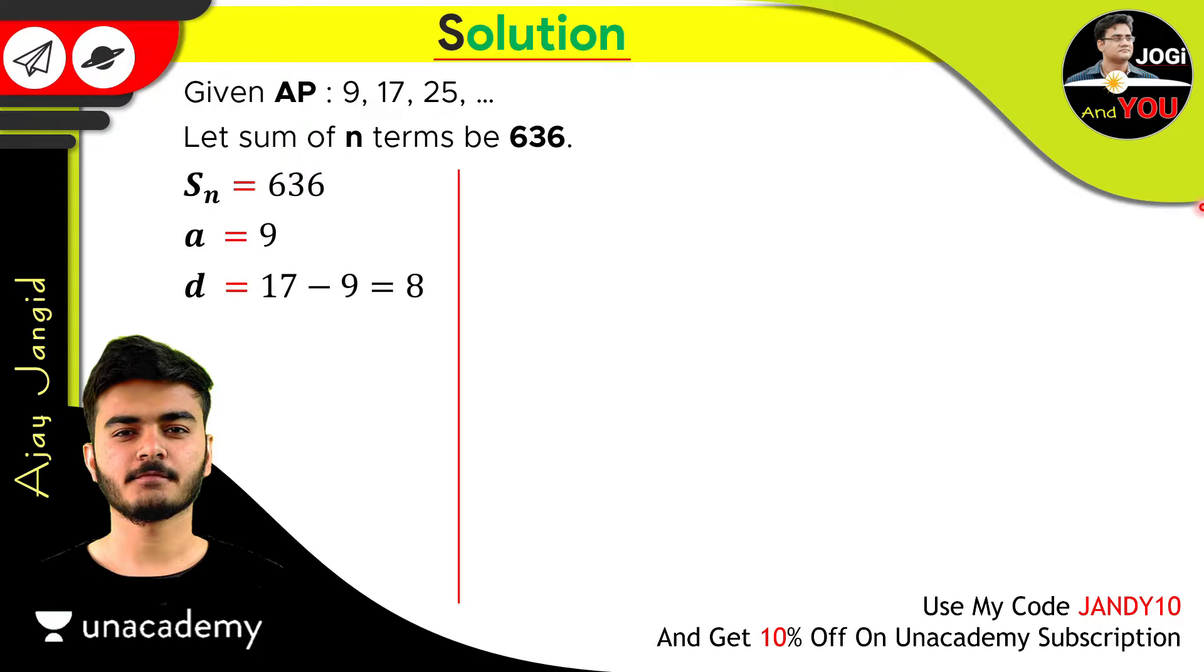So, these are some figures we have. And with the help of that, we will solve this question. And for solving this question, we have a formula, which is the sum of n terms, which is n upon 2 in bracket 2a plus n minus 1, d is equal to S_n.